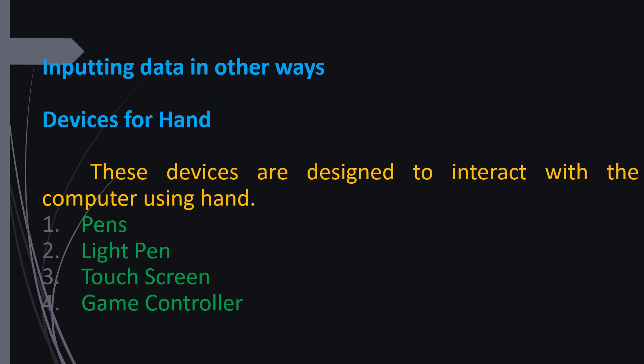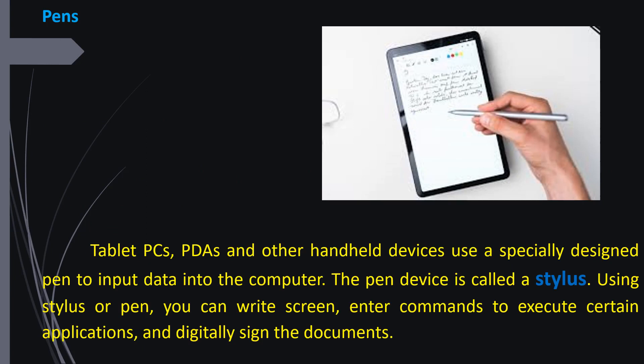There are four kinds of handheld devices, and another kind of handheld input device includes tablet PCs and PDAs, that is personal digital assistants, and other handheld devices. These use a specially designed pen to input data into a computer, and this pen is called a stylus. Using this stylus or pen, you can write on the screen, enter commands to execute certain applications, and digitally sign documents.